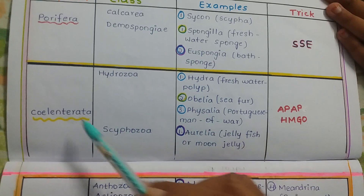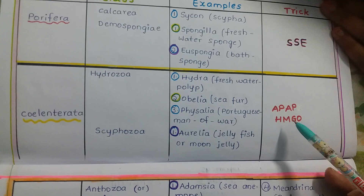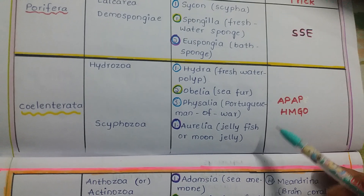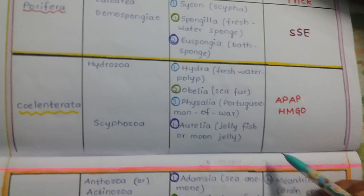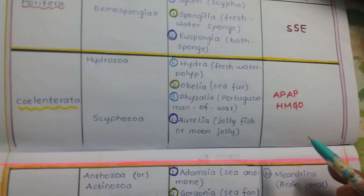The next phylum is Coelenterata. Here we have eight examples. You can remember all eight with a trick: AP AP HMGO.